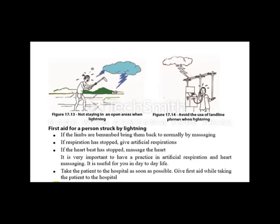If a person is struck by lightning and their limbs have gone numb, you can bring them back to normal by massaging them. If respiration has stopped, you can give artificial respiration, and if the heartbeat has stopped, you can massage the heart — but these should only be done with proper practice. The best course of action is to take the patient to the hospital as soon as possible.